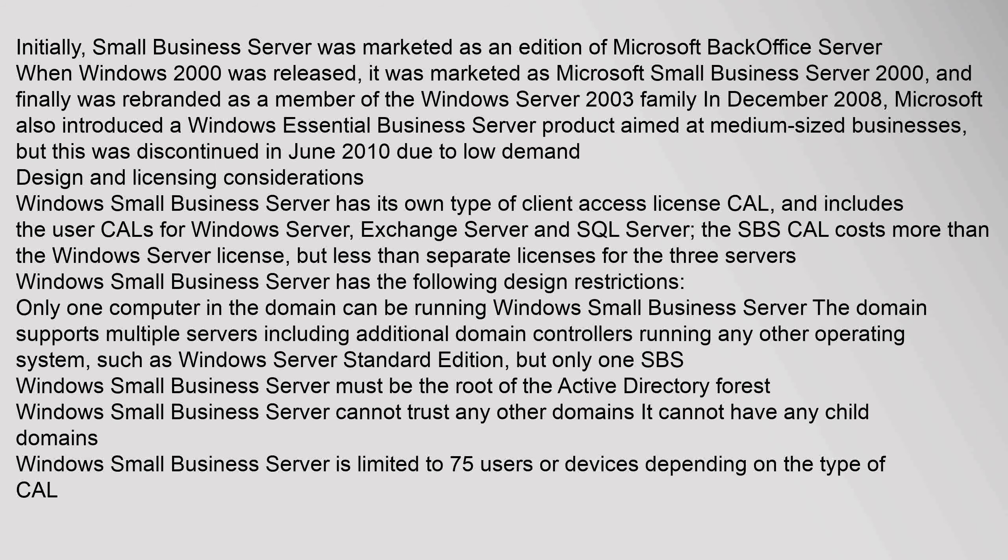Windows Small Business Server has its own type of client access license (CAL) and includes the user CALs for Windows Server, Exchange Server, and SQL Server. The SBS CAL costs more than the Windows Server license but less than separate licenses for the three servers. Windows Small Business Server has the following design restrictions: only one computer in the domain can be running Windows Small Business Server; the domain supports multiple servers including additional domain controllers running any other operating system such as Windows Server Standard edition, but only one SBS.